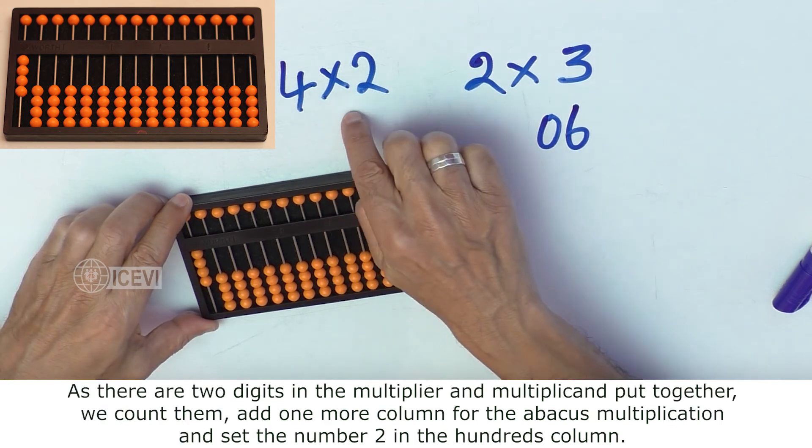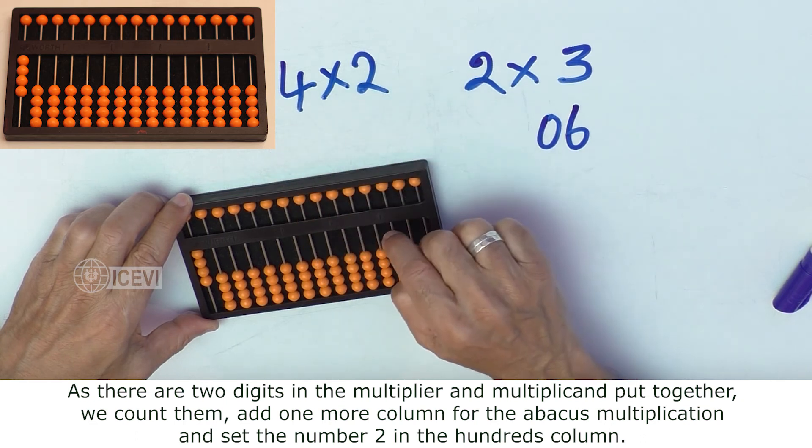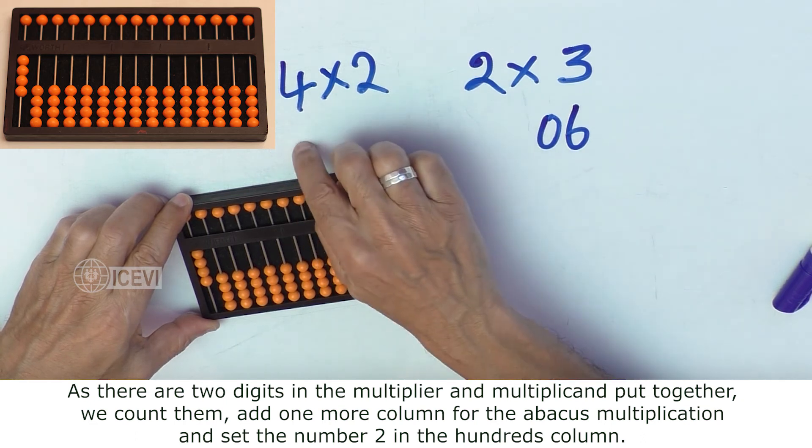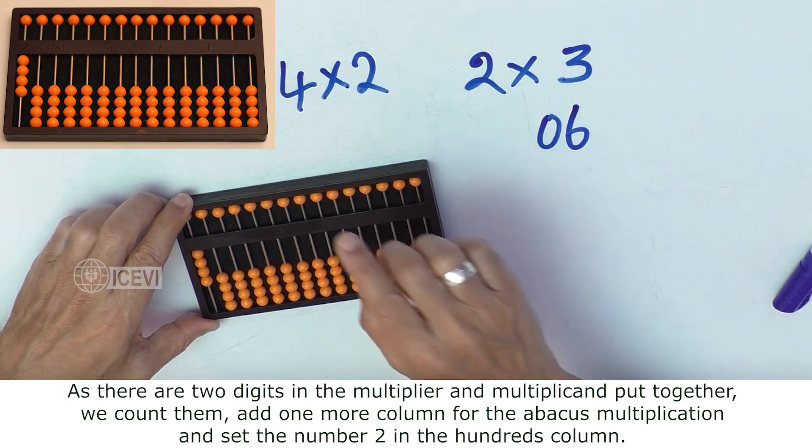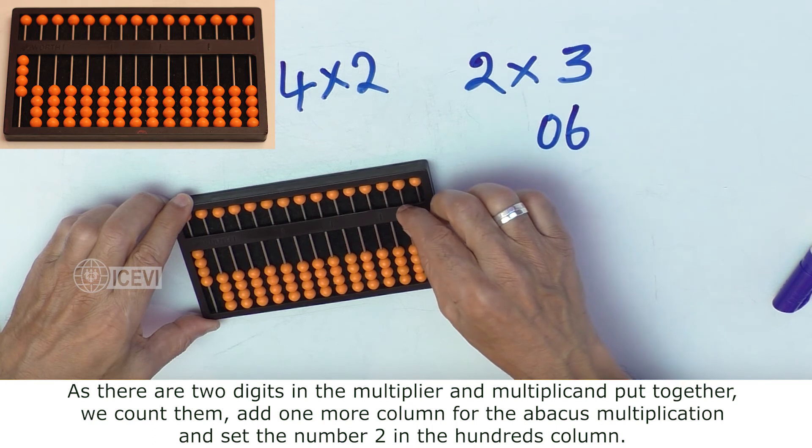As there are 2 digits in the multiplier and the multiplicand put together, we count them, add one more column for the abacus, and set the number 2 in the hundreds column.